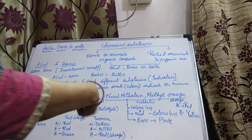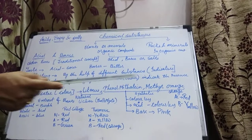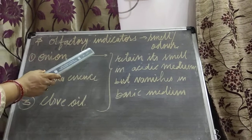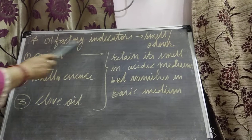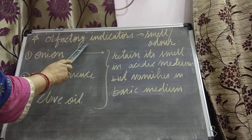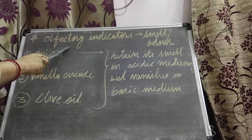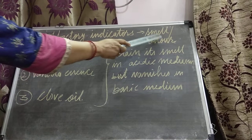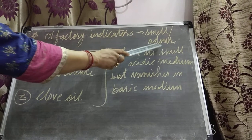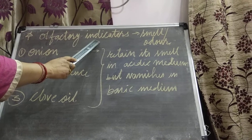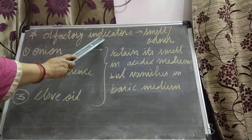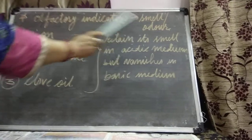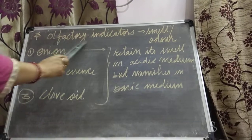Now I am taking olfactory indicators — the next type of indicators. What is the meaning of olfactory? Substances which indicate the presence of acid and base by changing their smell or odor are called olfactory indicators. That means indicators which change their odor in the presence of acid and base are called olfactory indicators.